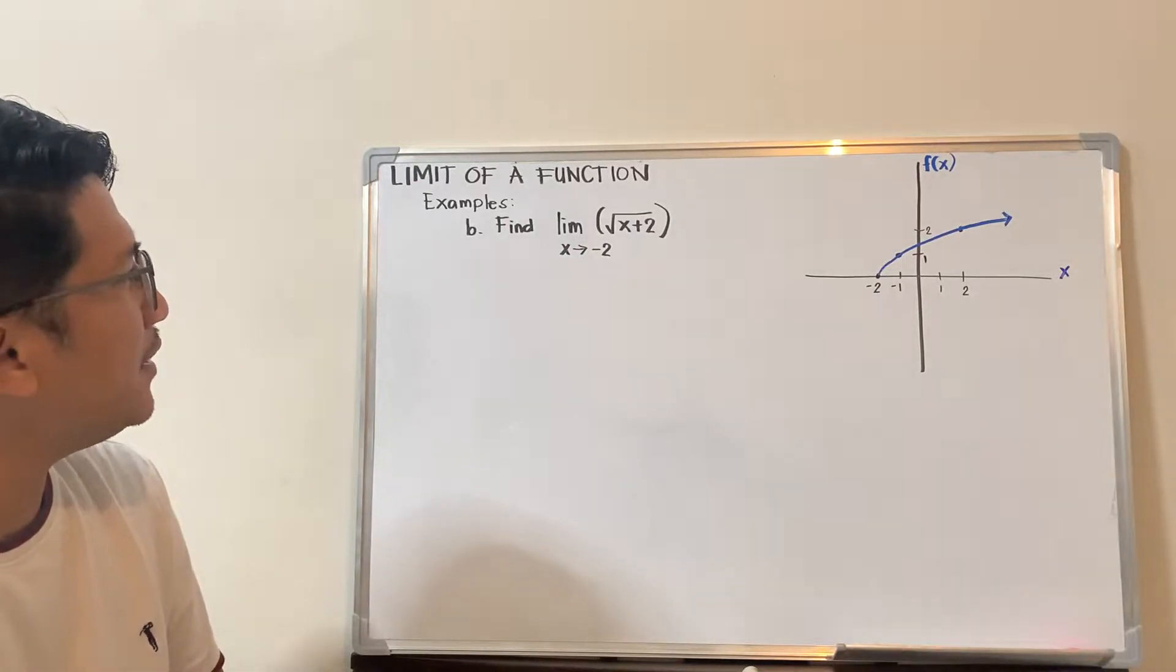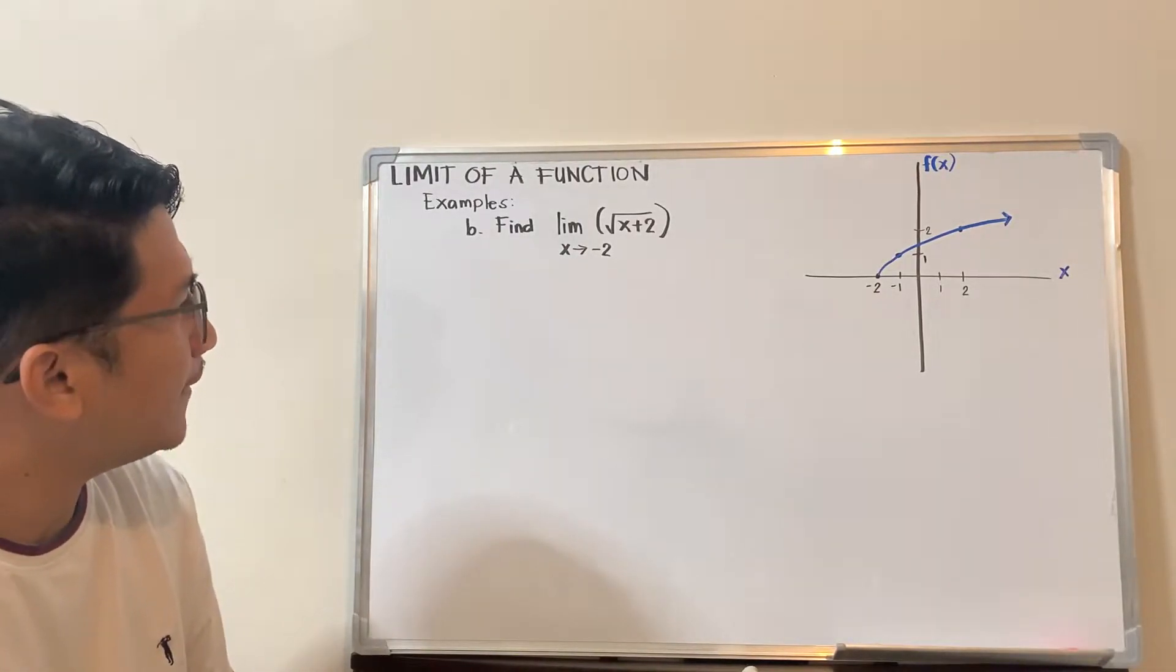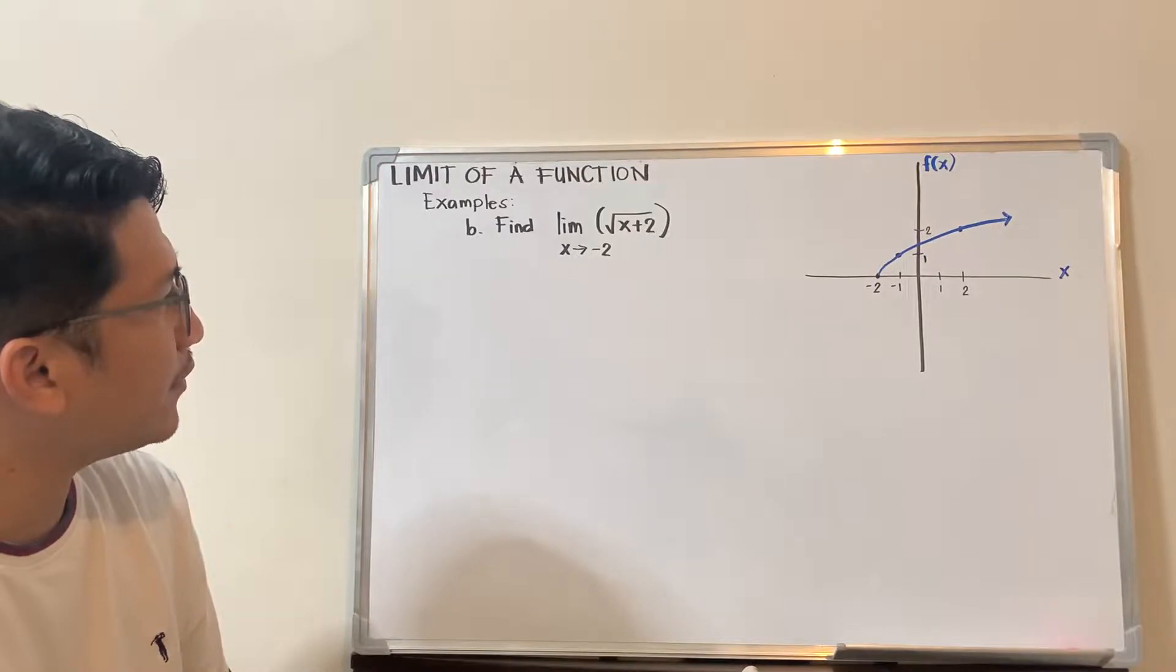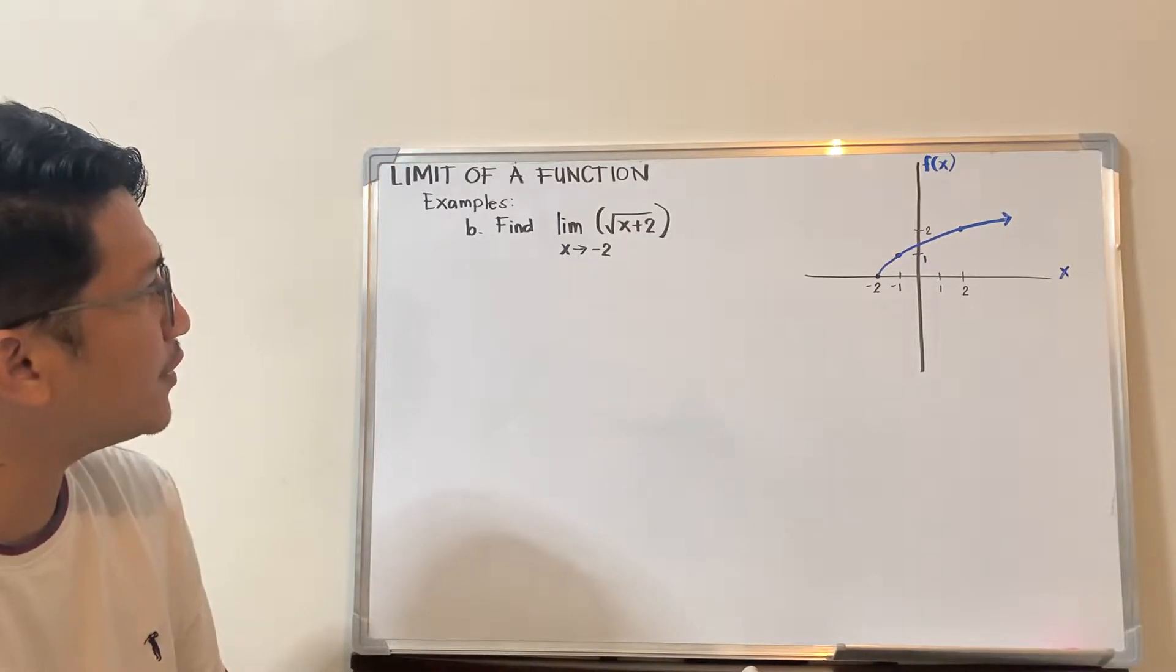We'll be talking about more examples about the limit of a function. This time we will be solving the limit of the square root of x plus 2 as x approaches negative 2.